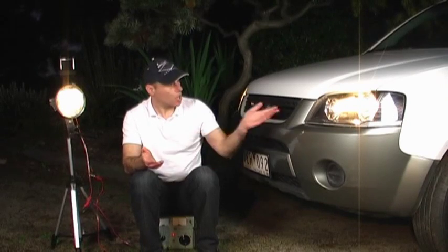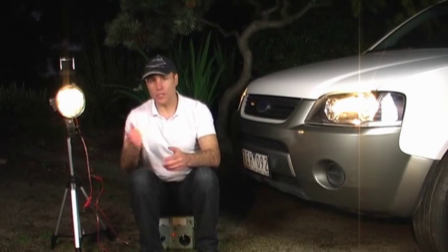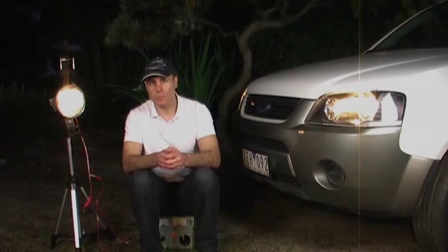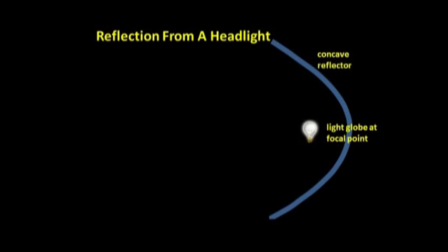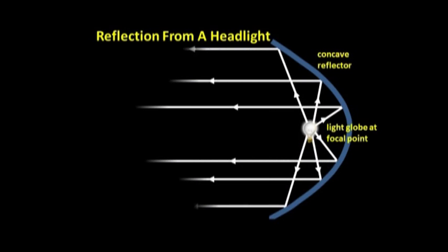Headlights on cars, like these ones here, and this one here, use concave reflectors too. The globe is again placed at the focal point of a concave reflector, just like it is in a torch, and the light comes out in a fairly concentrated beam.